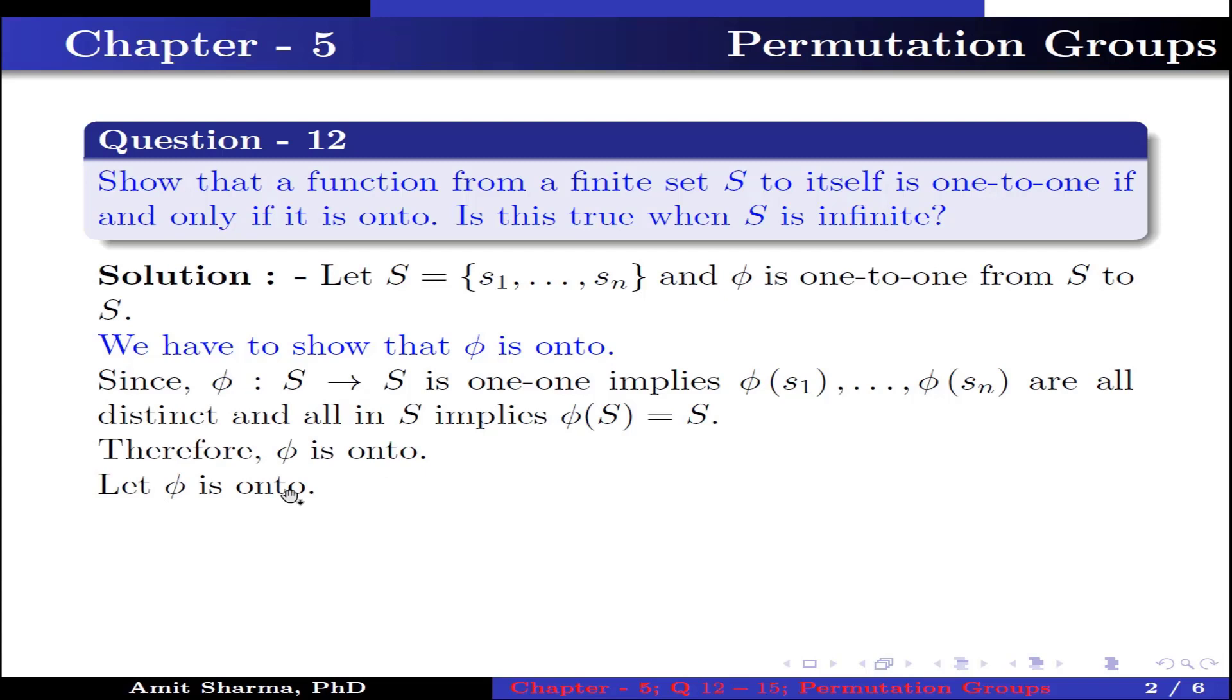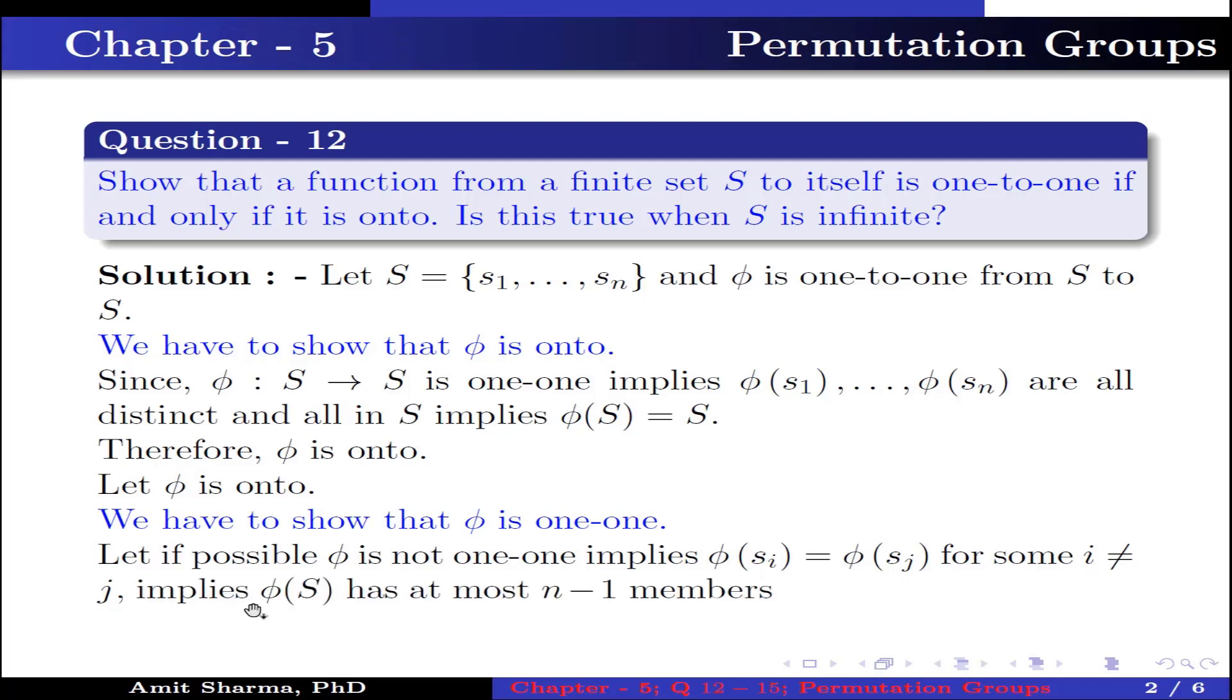Let φ is onto. We have to show that φ is one-to-one. Let if possible φ is not one-to-one. This implies φ(sᵢ) = φ(sⱼ) for some i ≠ j. This implies φ(S) has at most n-1 members, which is a contradiction as φ is onto.